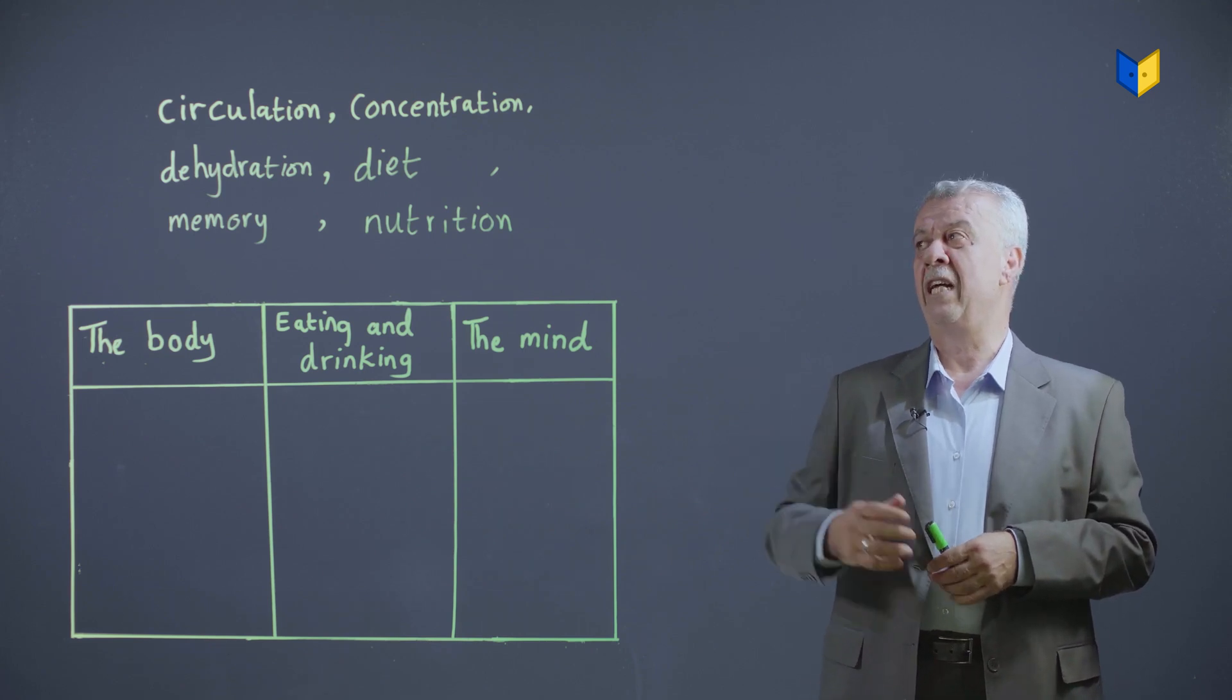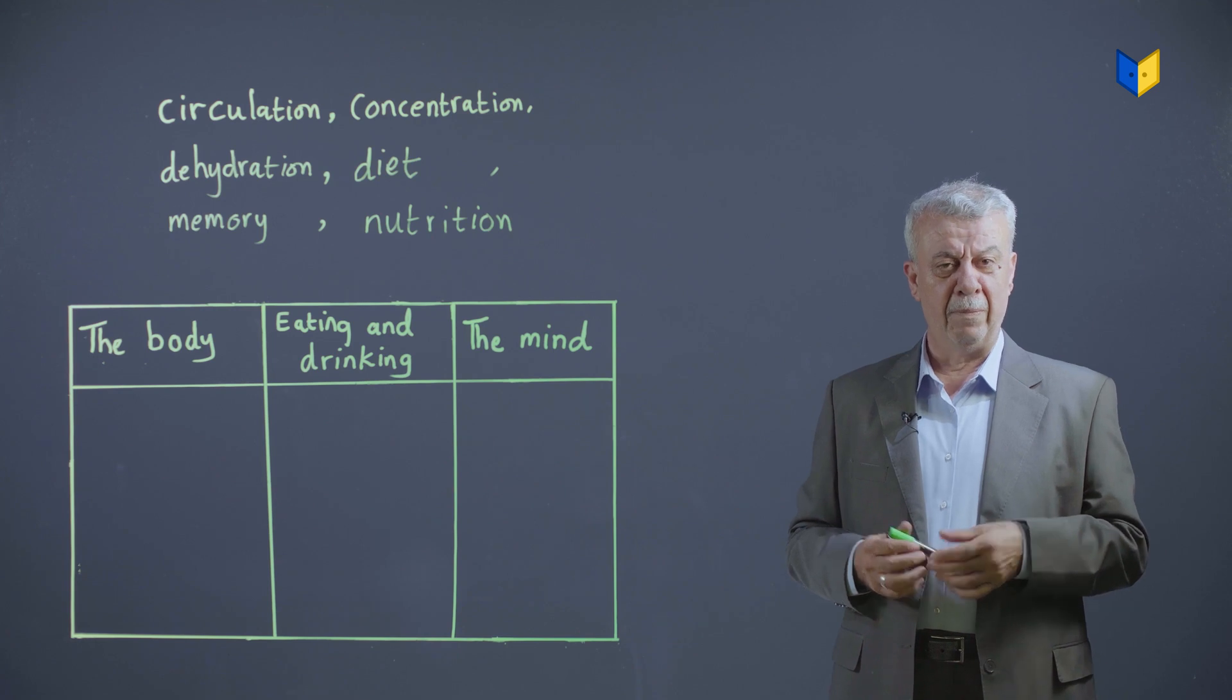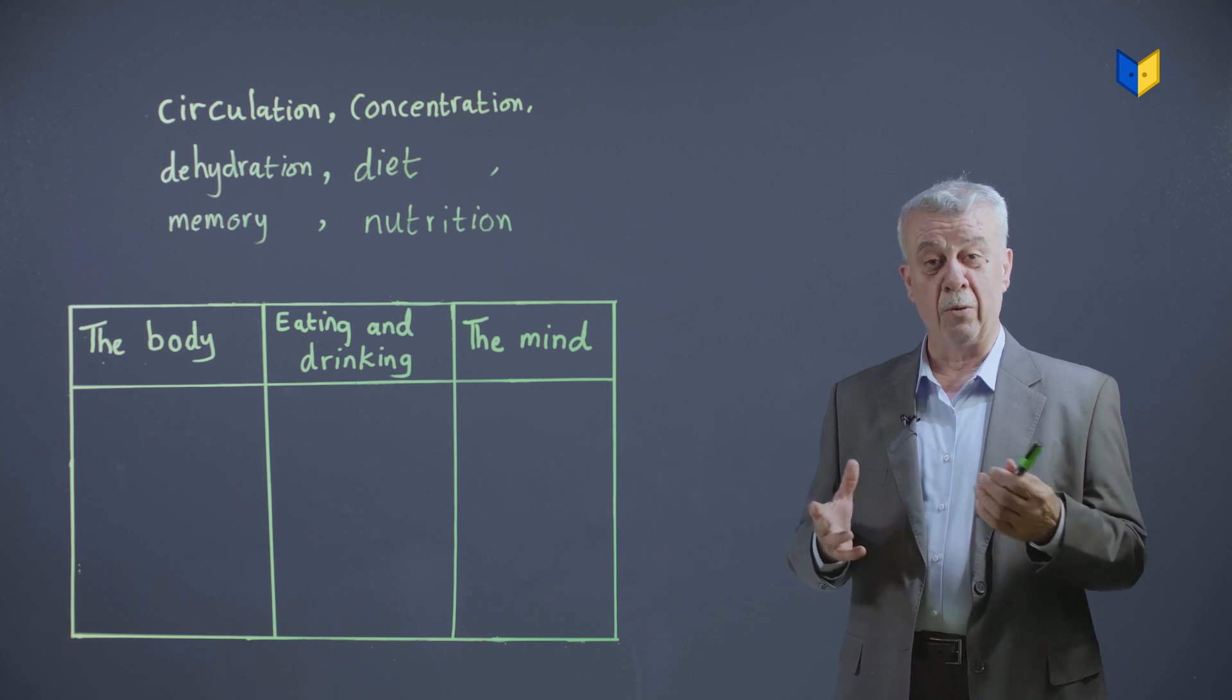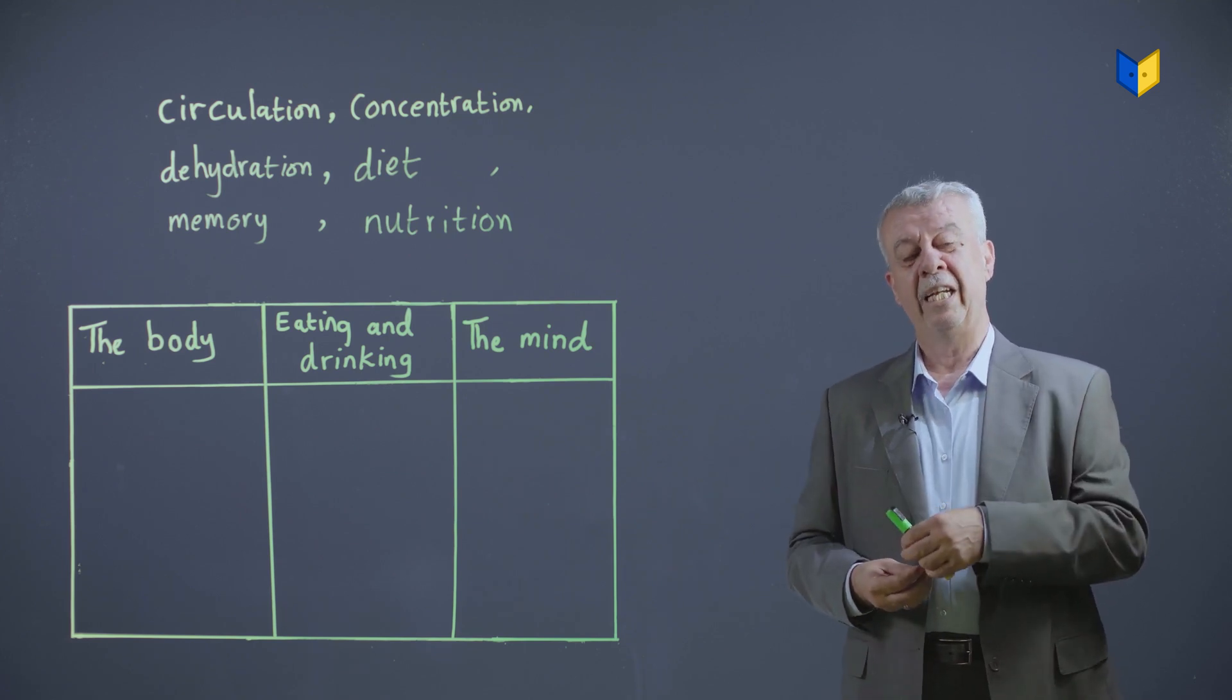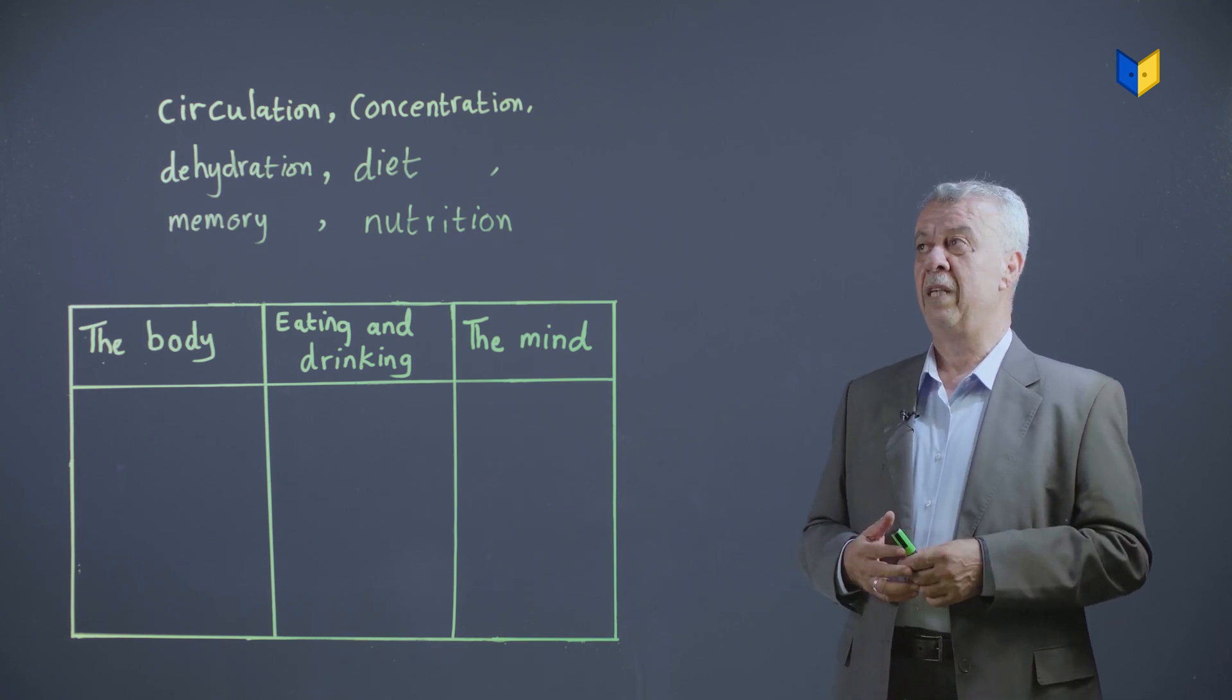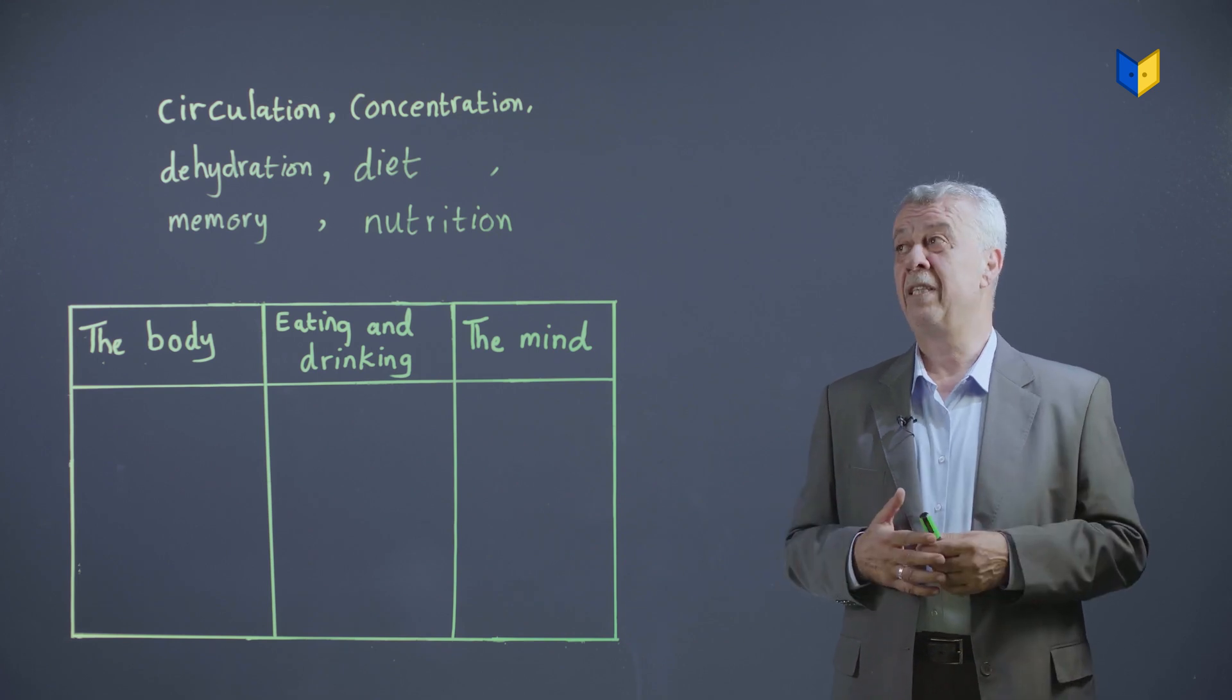Let's look at the vocabulary items. Circulation. Remember circulation? The movement of blood around the body. الدور الدموي. طبعا دورة here is circulation, but here it is connected with blood. Circulation. Concentration. Focus. Attention. تركيز.